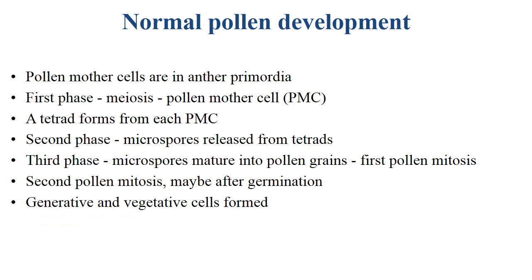Normal pollen development is as follows. The pollen mother cells are in the anther primordia. In the first phase, meiosis, the pollen mother cells lead to tetrad formation — one tetrad forms from each pollen mother cell. In the second phase, microspores are released from the tetrad. In the third phase, microspores mature into pollen grains, leading to first pollen mitosis. In the second pollen mitosis — perhaps after germination — vegetative and generative cell formation occurs.